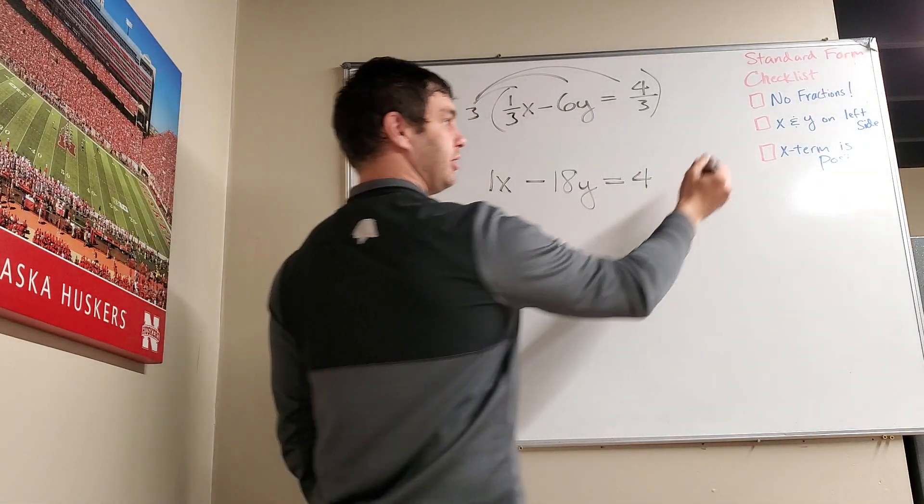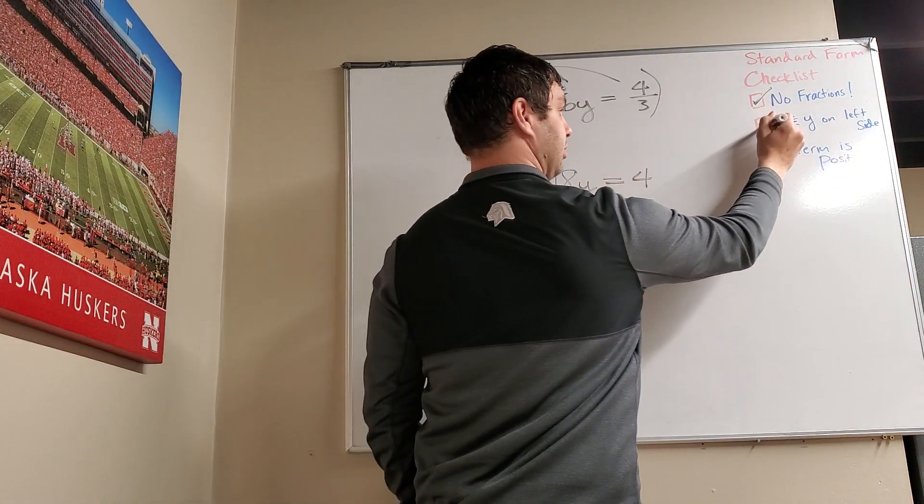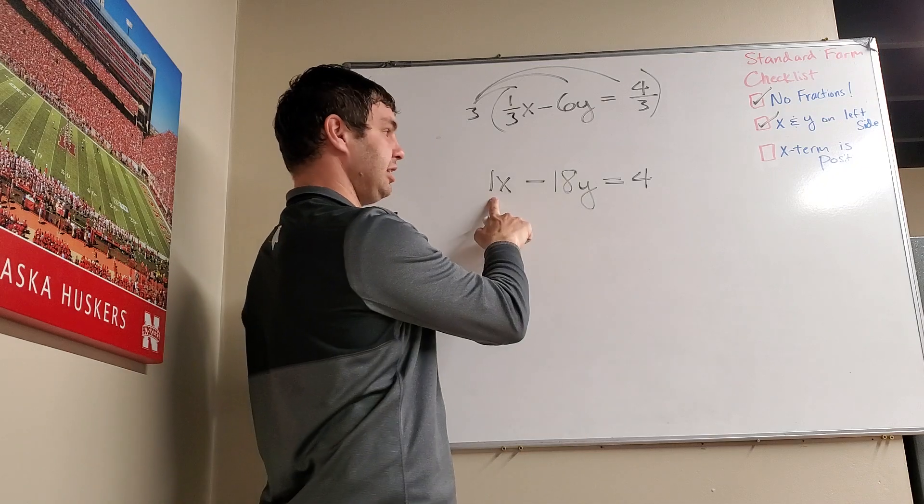So if I go to my checklist, there are no fractions. The x and y are on the left side, and the x term is positive. So this is standard form for that equation.